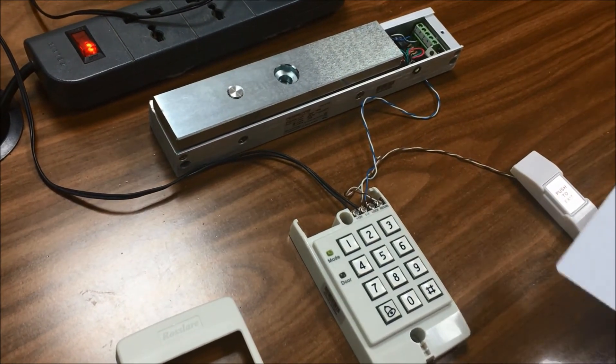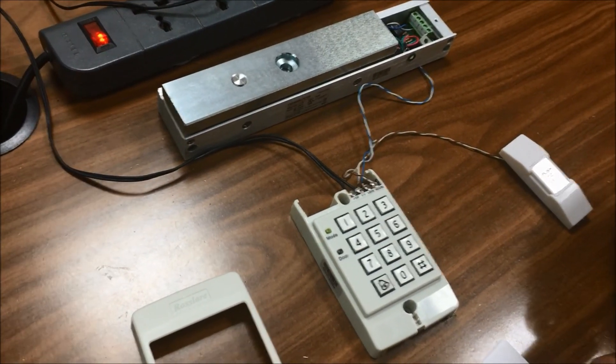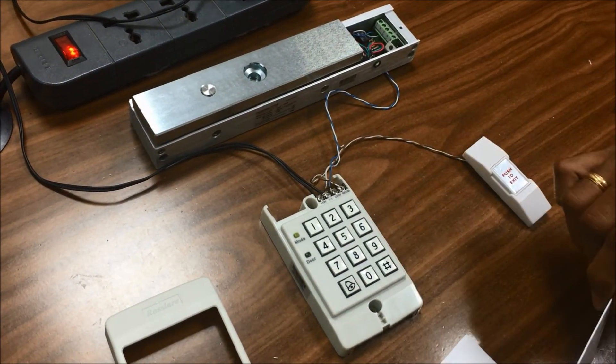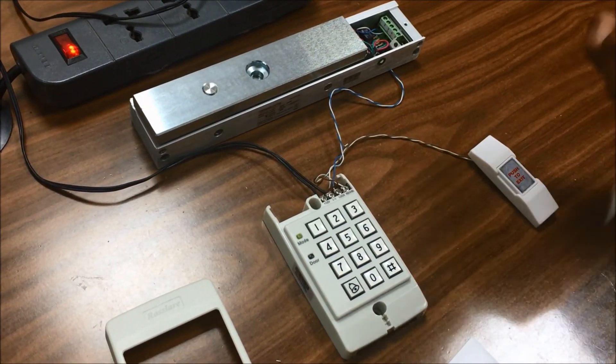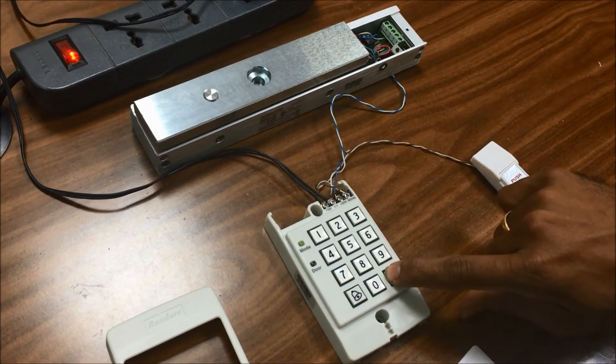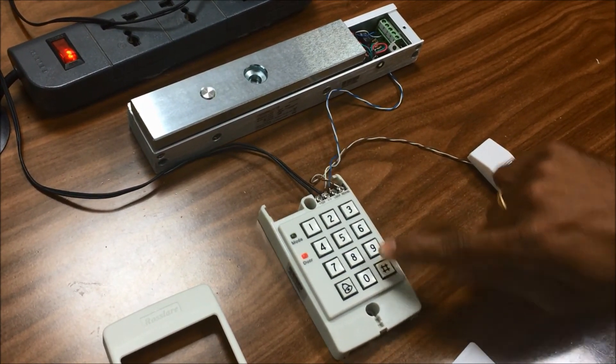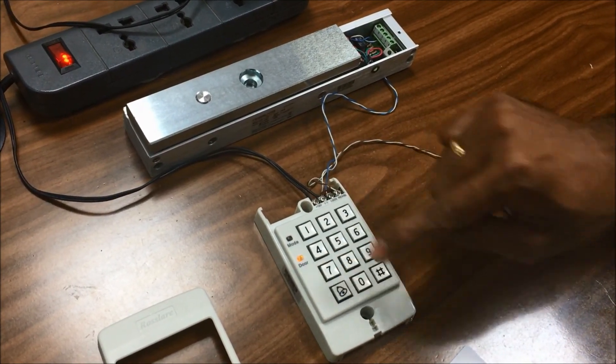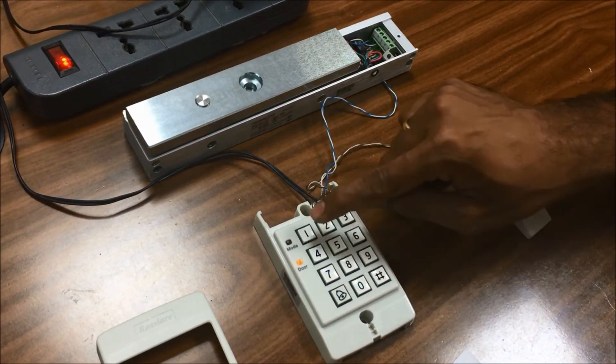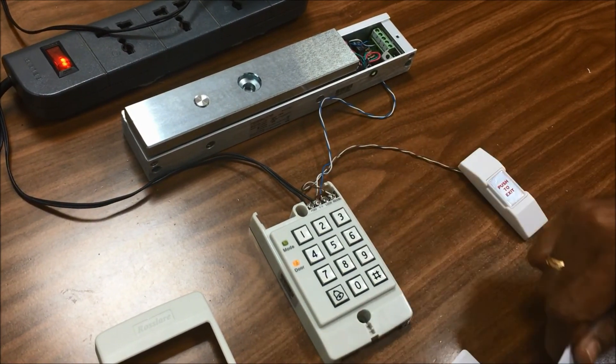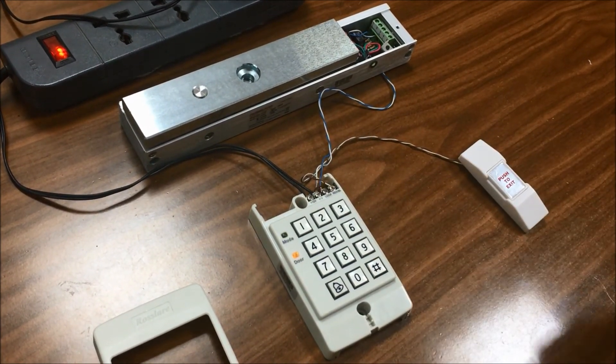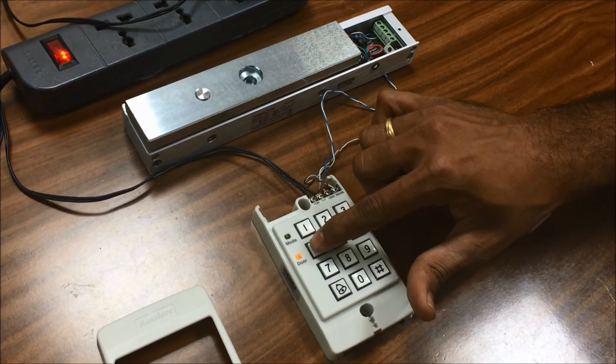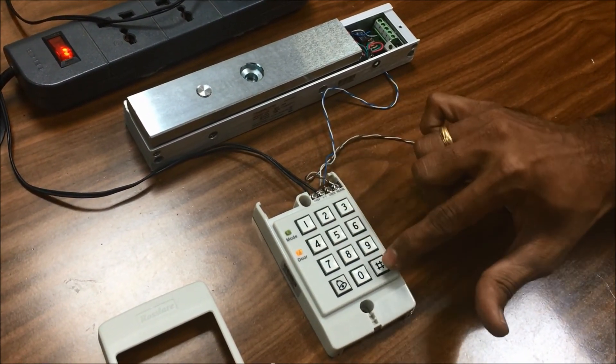At present, we have 2 cards, proximity 125 kHz non-HID. When we show them, the lock doesn't open, so we need to add those cards. Again, hash for 2 seconds, 1234, 7 number 001. First card, hash. Second card, hash. PIN 4545, hash.